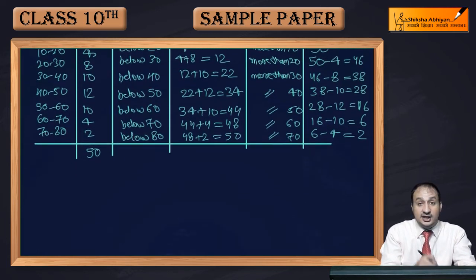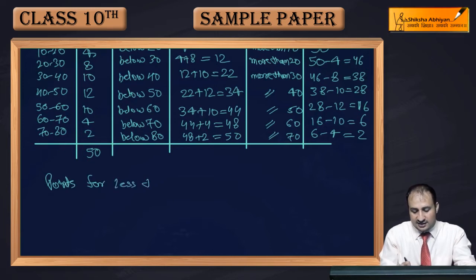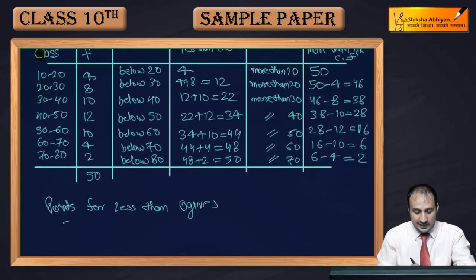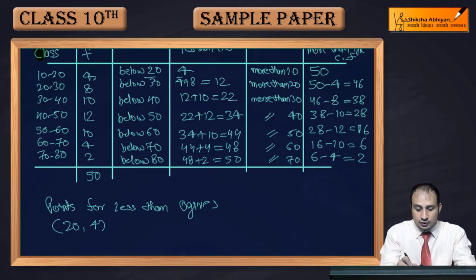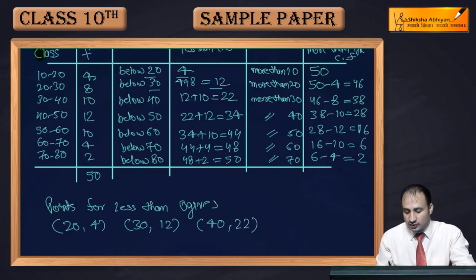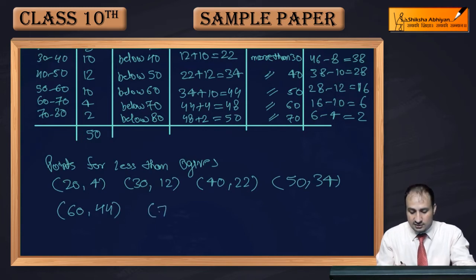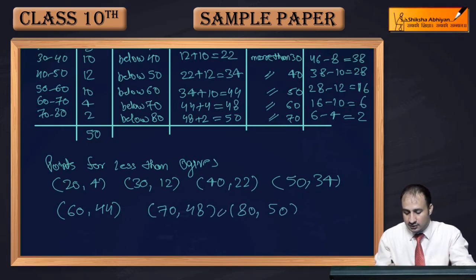Now you have to plot here. So for less than ogives, points for less than ogives, the points will be: first point will be 20 comma 4, then will be 30 comma 12, 40 comma 22, 50 comma 34, 60 comma 44. The next point is 70 comma 48, and last point is 80 comma 50. So these are your points.